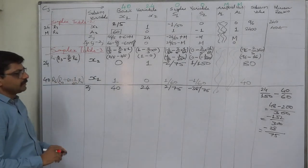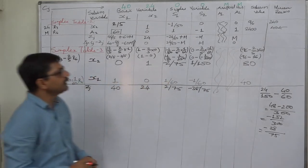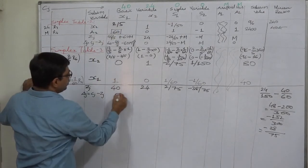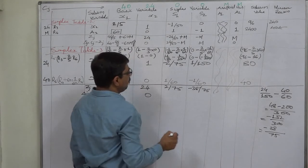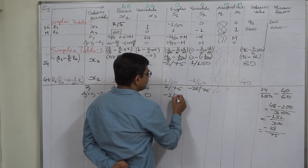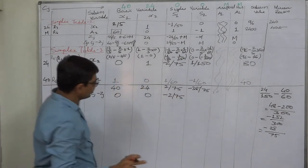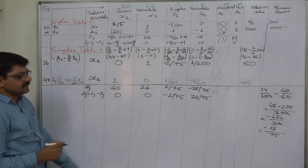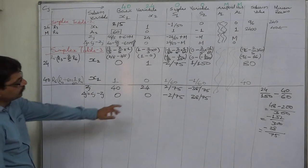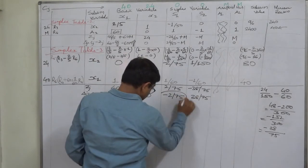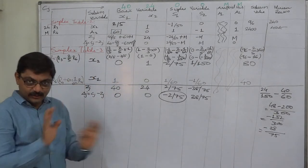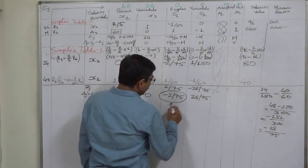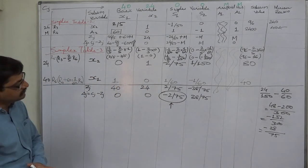Since we don't yet know whether this is the optimal solution, we don't write the Z value in the solution column yet. Delta J = CJ − ZJ: 40 − 40 = 0; 24 − 24 = 0; 0 − (2/75) = −2/75 (negative — not optimal!); 0 − (−38/75) = +38/75. Since this is a minimization case, all delta J must be 0 or positive; the −2/75 value indicates this is not the optimal solution. We select the lowest delta J, so S1 becomes the key column.